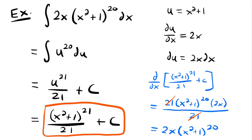Maybe I made that seem easy, but it might not always be clear what to set equal to u — that comes with practice. The key thing to ask yourself when choosing u is: do I see a function and its derivative? We set u equal to x² + 1 and its derivative, 2x, had to be somewhere in the integral so we could replace it with du. If you set something equal to u, make sure its derivative appears in the integral. If you weren't sure at first, go piece by piece — the derivative of 2x is 2, but that's not visible; whereas the derivative of x² + 1 is 2x, and it's right there.